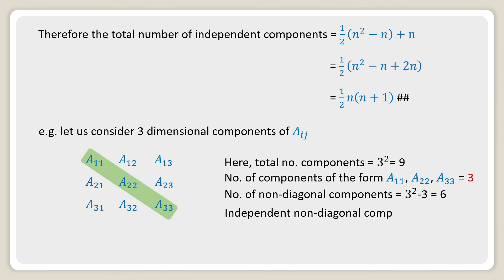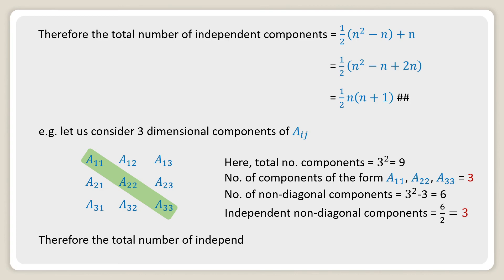The independent non-diagonal components are reduced to half, since a₂₁ = a₁₂, a₃₁ = a₁₃, and a₃₂ = a₂₃. Therefore, the independent non-diagonal components are 6/2 = 3. The total number of independent components is 3 + 3 = 6, which equals half of 3(3+1).